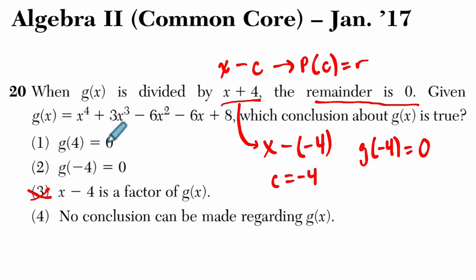g of 4 is zero. There they're hoping you'll see this positive 4 and plug that in. That's not true. But really, we're plugging in negative 4. If you plug in negative 4 and get zero, this is happening here. Don't confuse that.